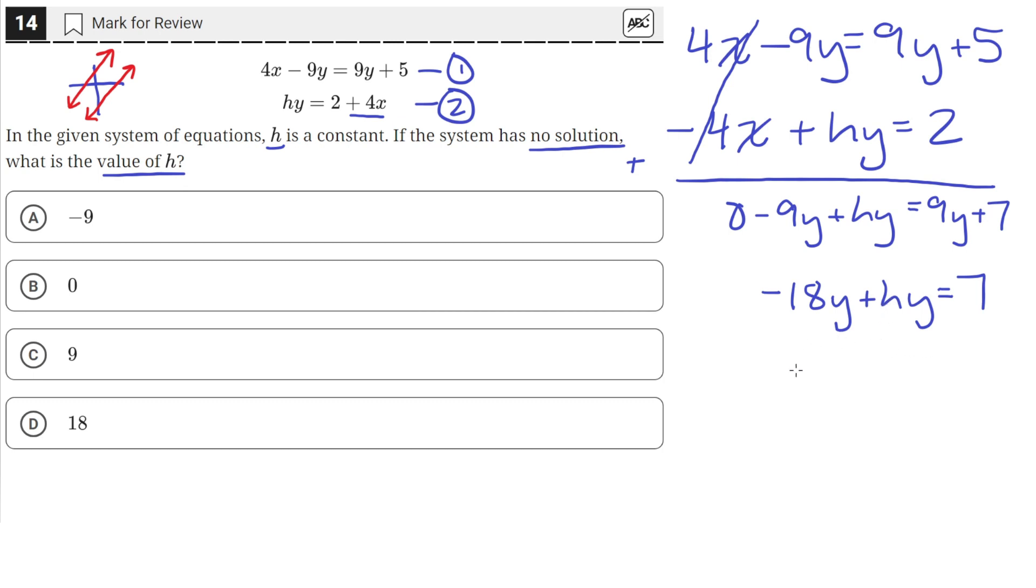So we need to choose an h value accordingly so that this 18y gets cancelled out. And we can do that by setting h equal to 18.